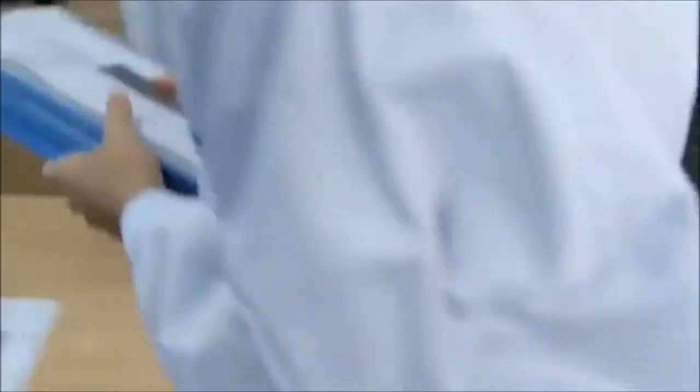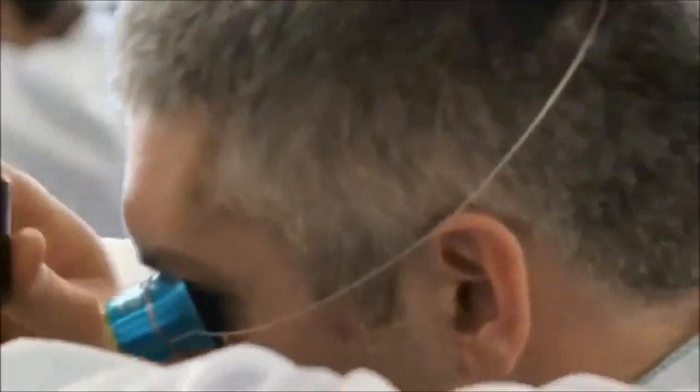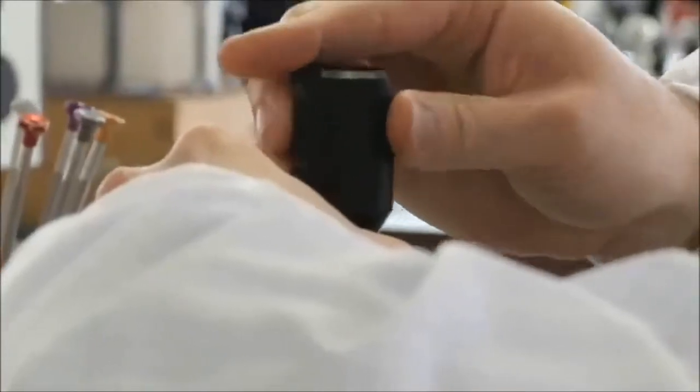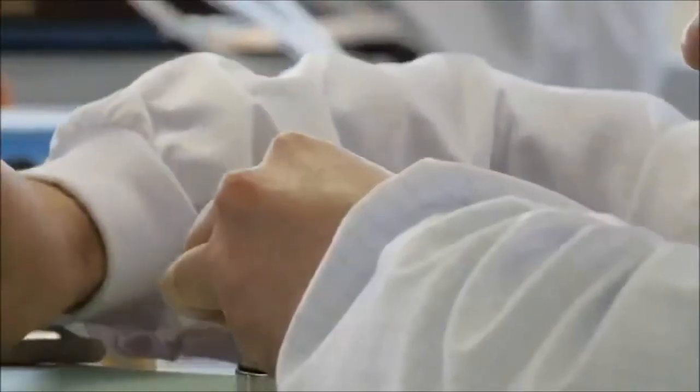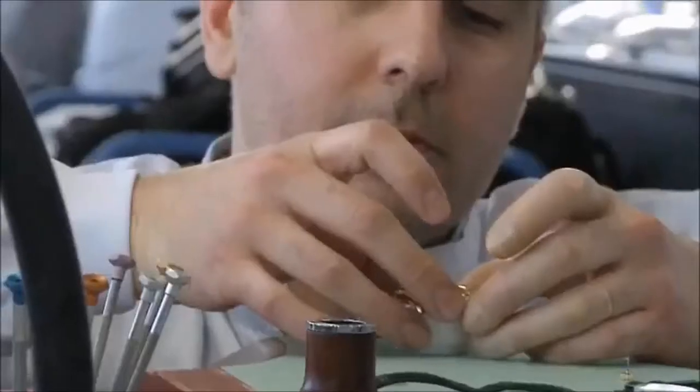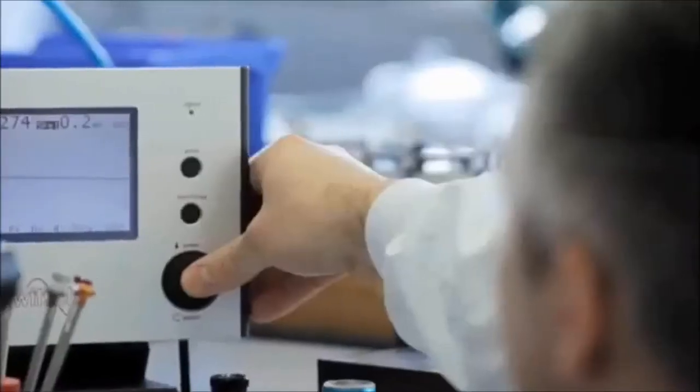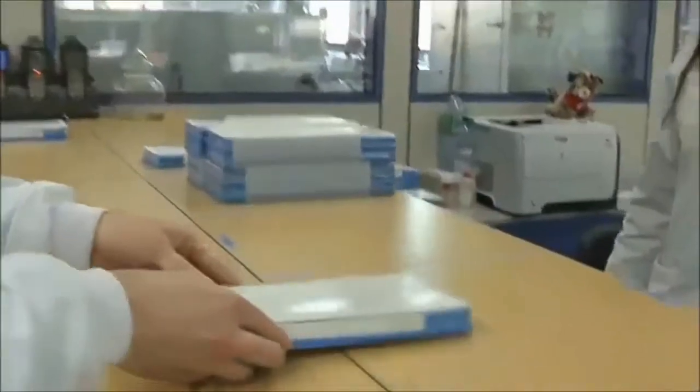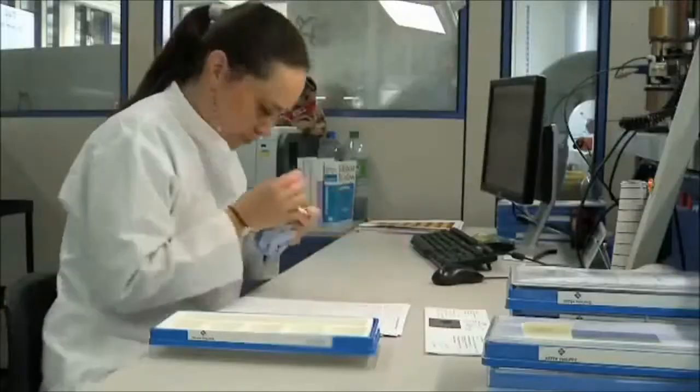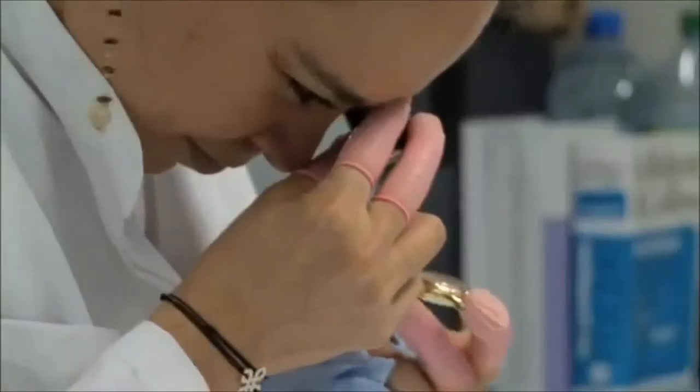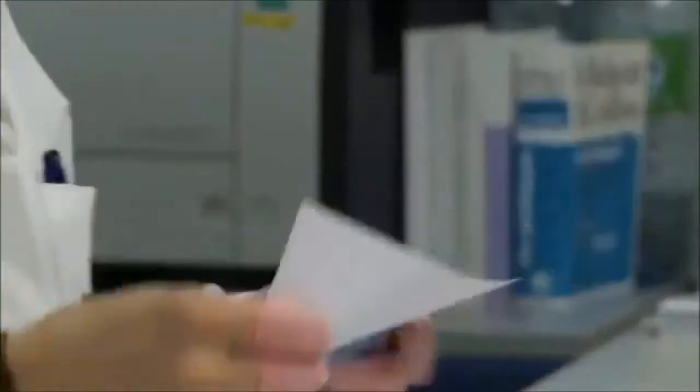It then goes to the workshop to be assessed by a watchmaker. This is an important stage as it defines the process of the service or repair. The watchmaker removes the movement from the case and carries out a diagnostic test to check its accuracy. The watch case is then taken to the case and bracelet specialists where an aesthetic assessment is made on its condition.